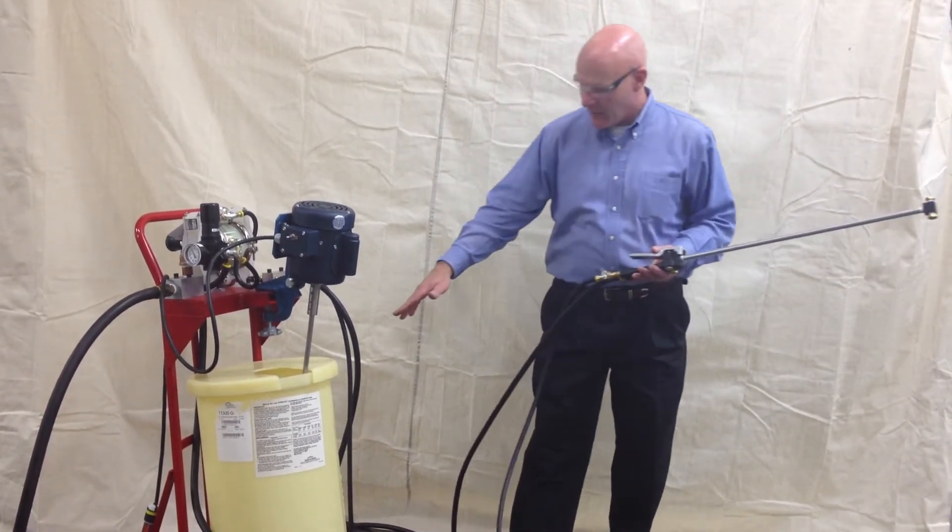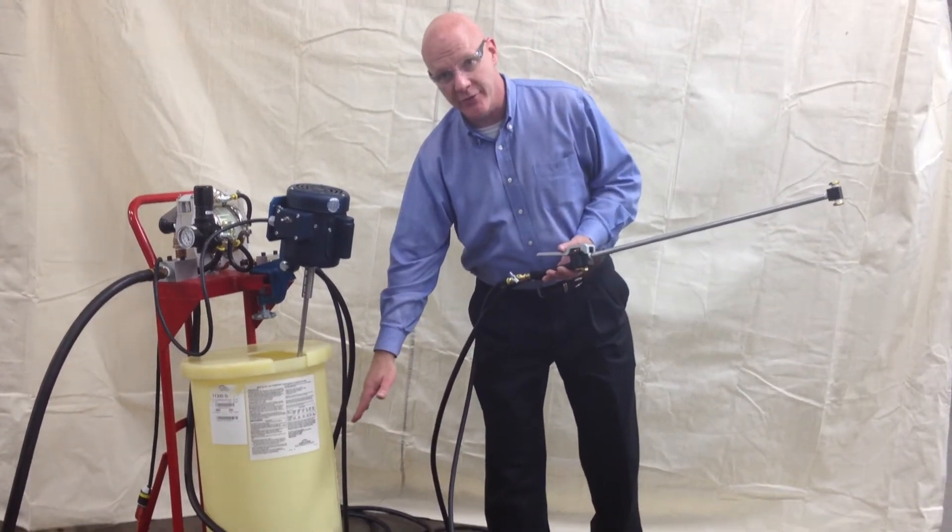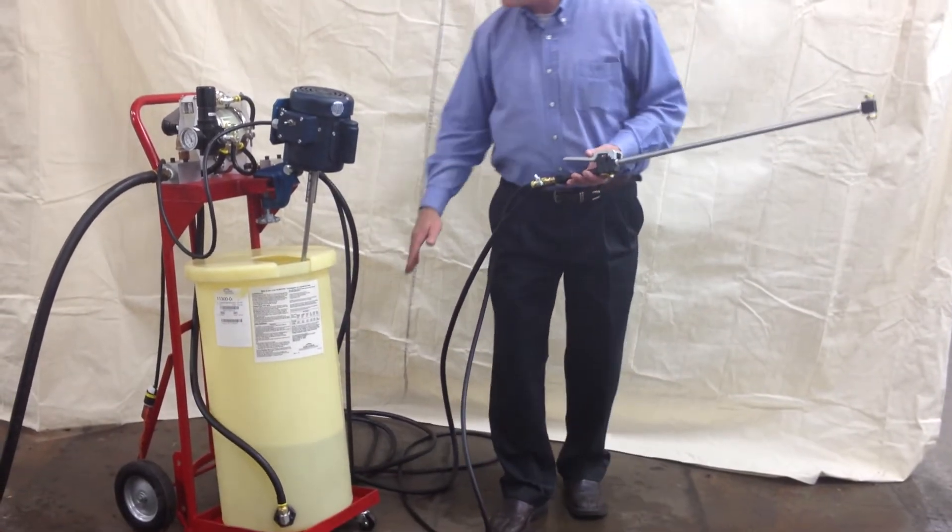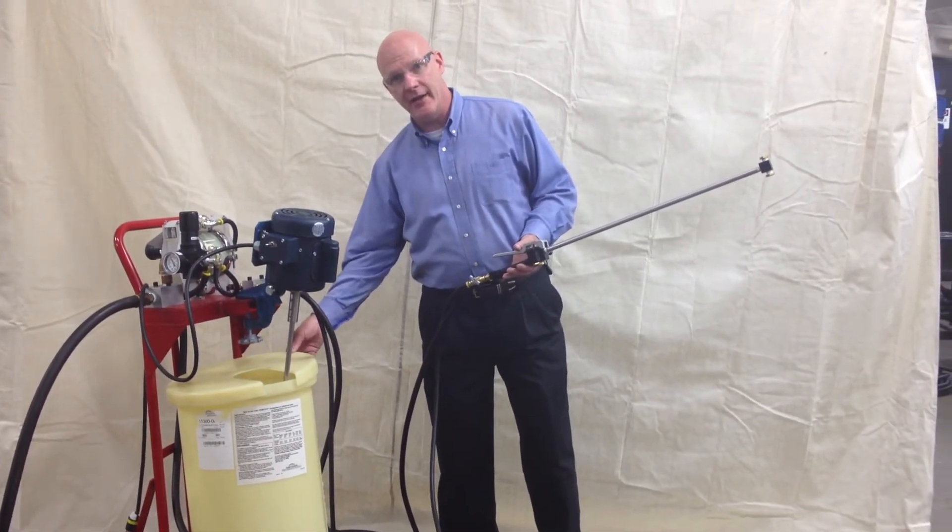There are graduations on the side in liters and gallons. It's semi-translucent, so you can easily see your fluid level. The lid helps reduce contamination and evaporation.